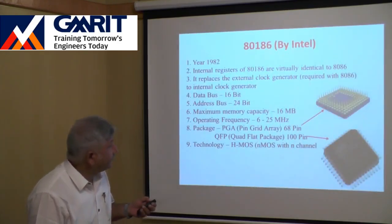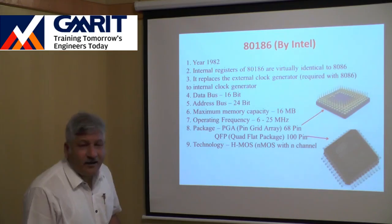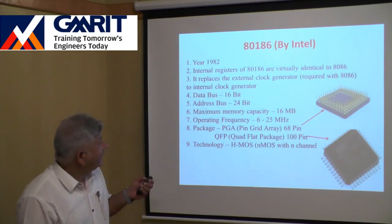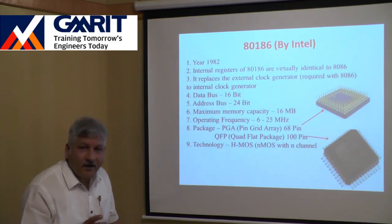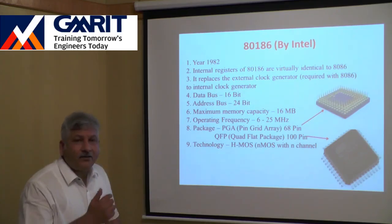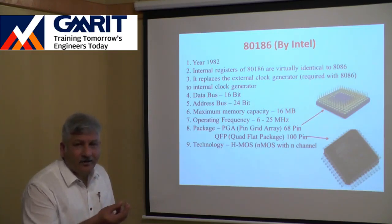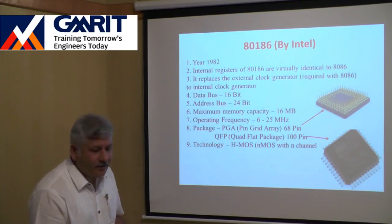After the 8086, Intel launched the 80186 in 1982. Its internal registers were virtually identical to the 8086, but one important addition was an on-chip clock oscillator. In the 8086, an external oscillator was required to generate the synchronization clock, but in the 80186, the internal oscillator was built inside the chip, eliminating the need for an external clock generator.